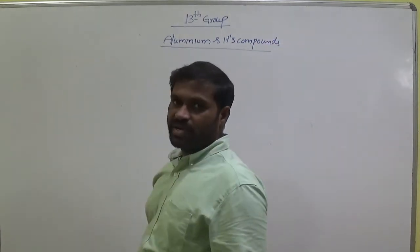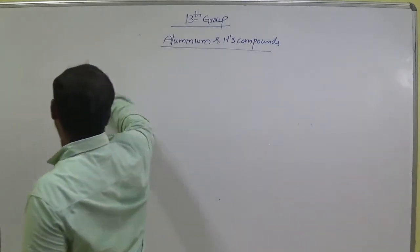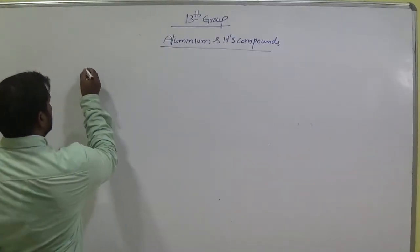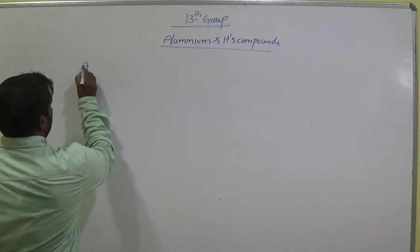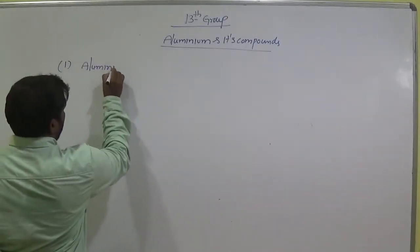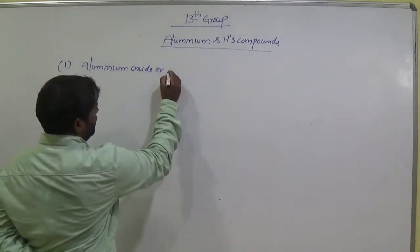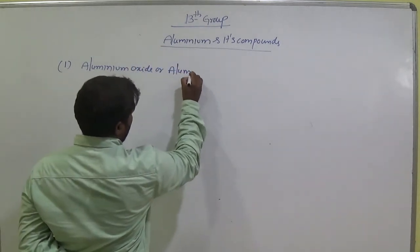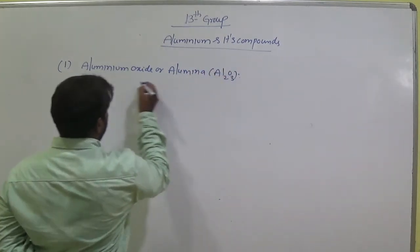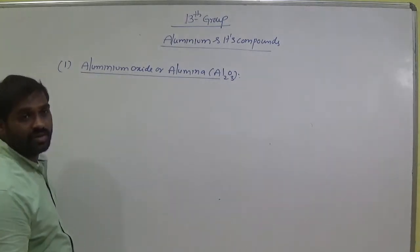Now today we are going to discuss some important compounds of Aluminium. The first important compound is Aluminium Oxide or Alumina. What is the formula? Al₂O₃.